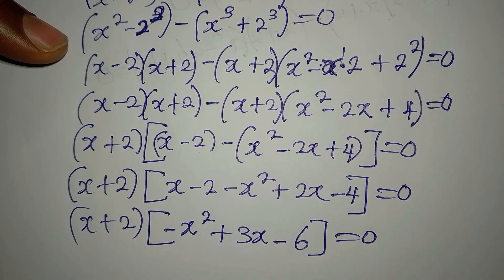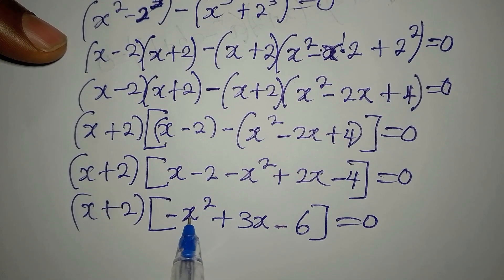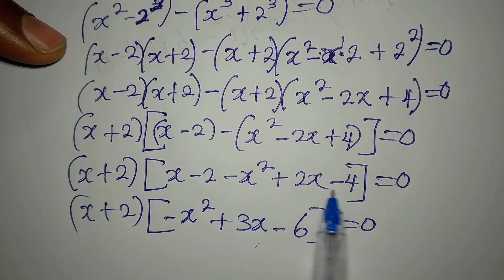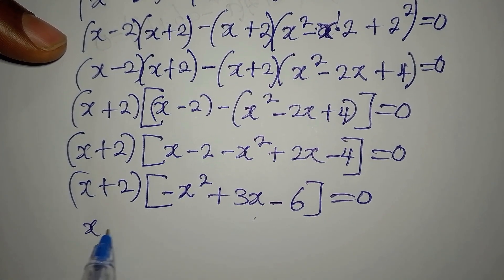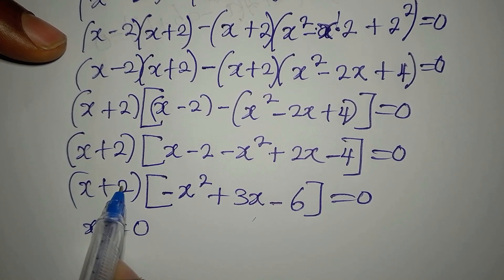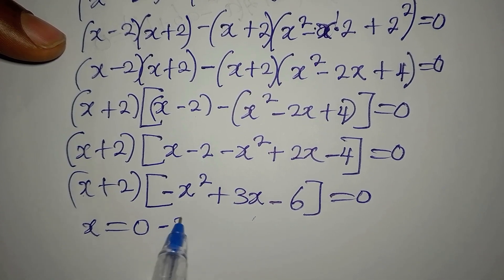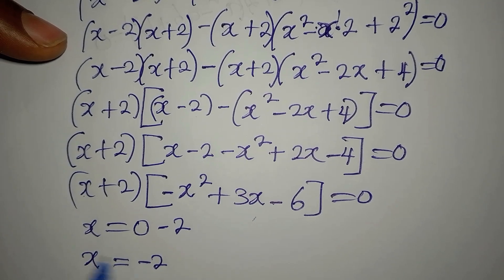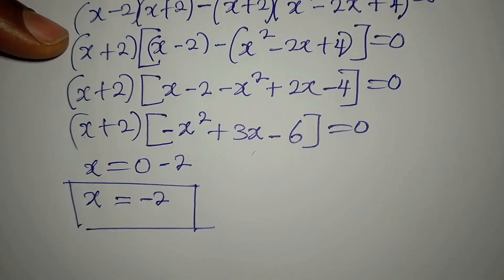We can confirm: minus x squared, then x plus 2x is 3x, and minus 2 minus 4 is minus 6. So we have x plus 2 times the quantity minus x squared plus 3x minus 6 equals 0. From x plus 2 equals 0, we get x equals negative 2. This is one of the solutions.